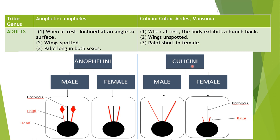But in the case of Culicine male, the maxillary palpi are longer than the proboscis, while in the case of female Culicine, the maxillary palpi are shorter than the proboscis — meaning the palpi are of unequal length in male and female. Remember: in Anopheles, length of proboscis and palpi is somewhat equal, while in Culicine it is unequal. In male Culicine, palpi are longer than proboscis, while in female Culicine, palpi are shorter than proboscis.